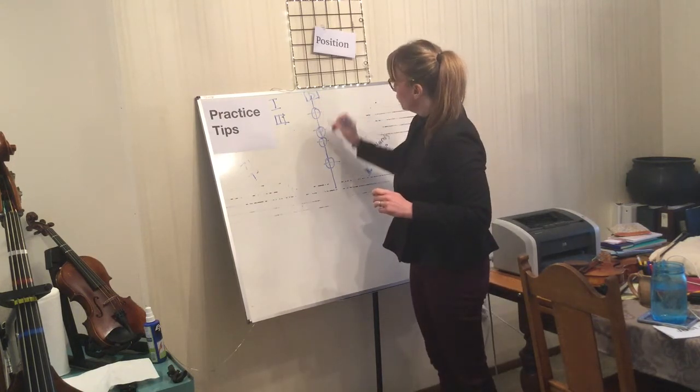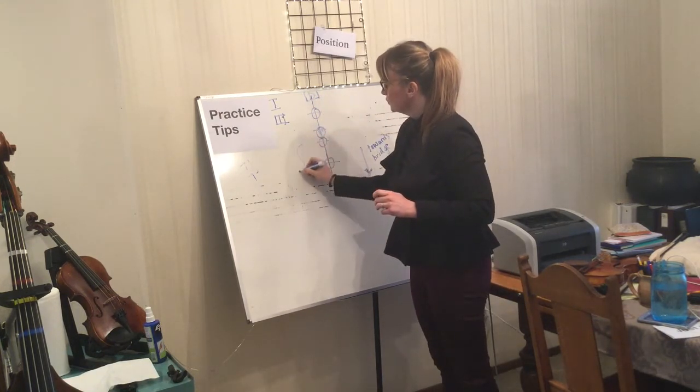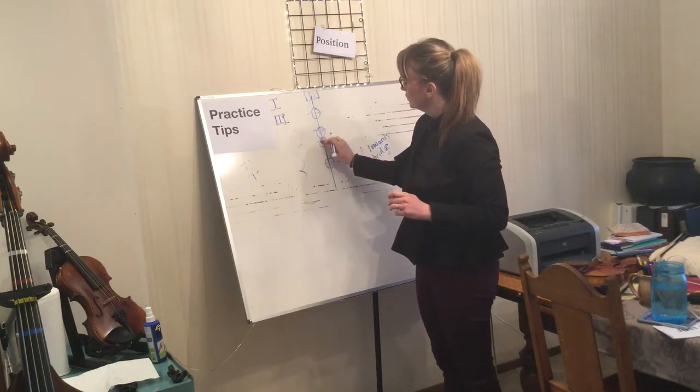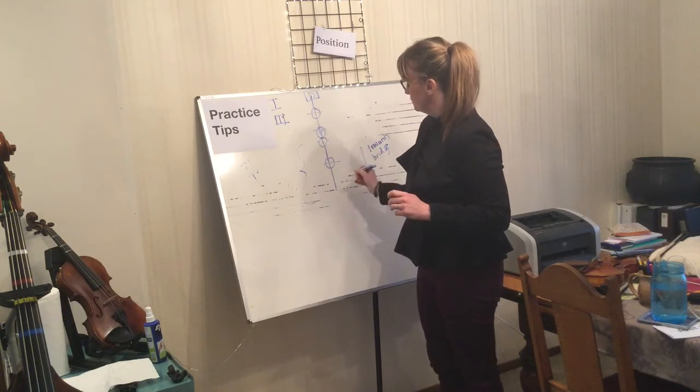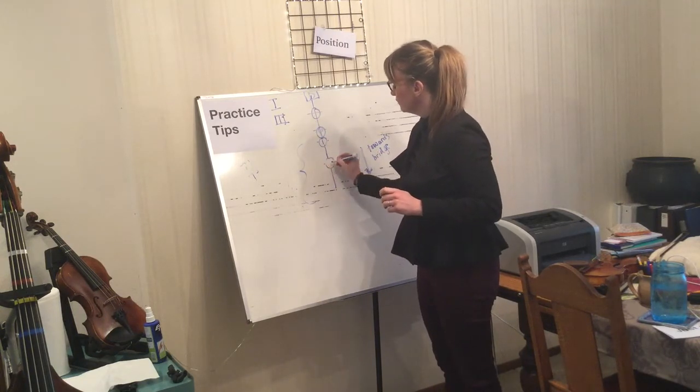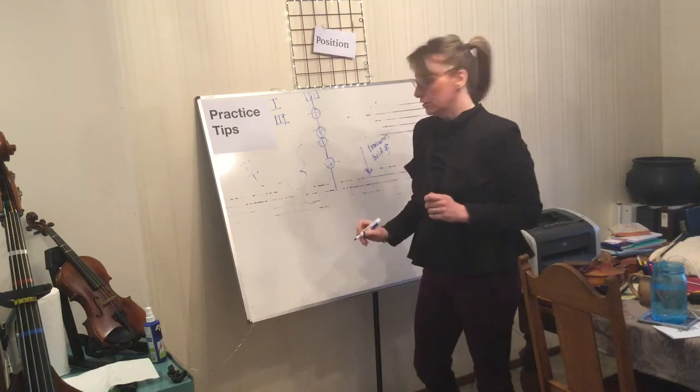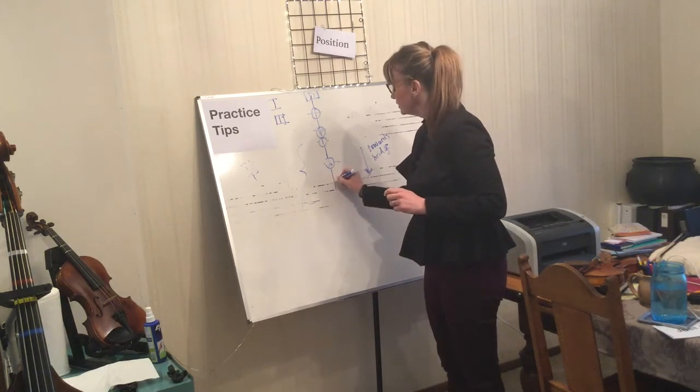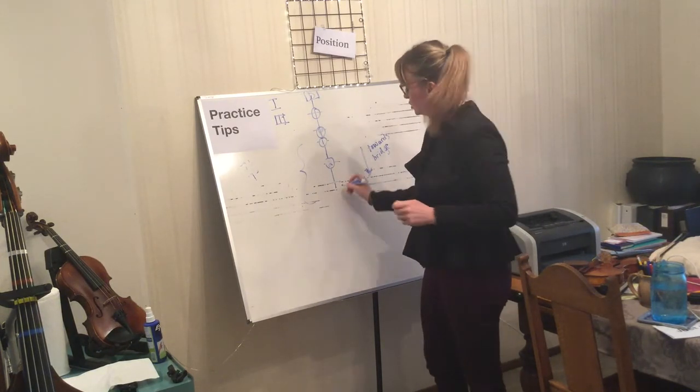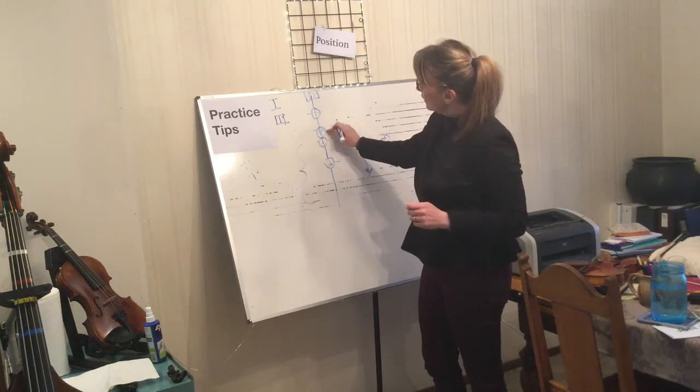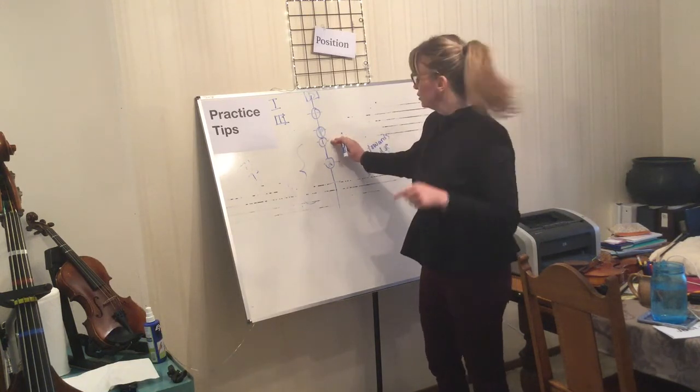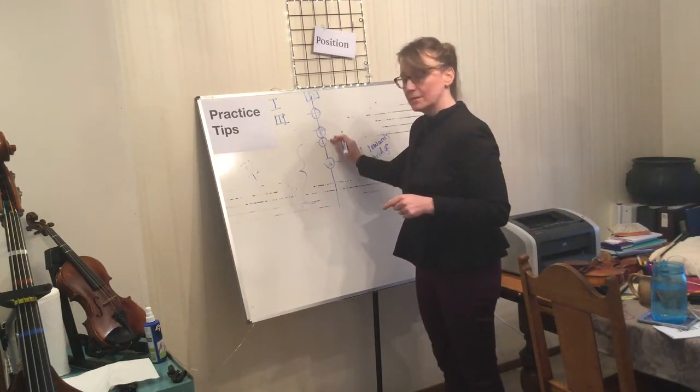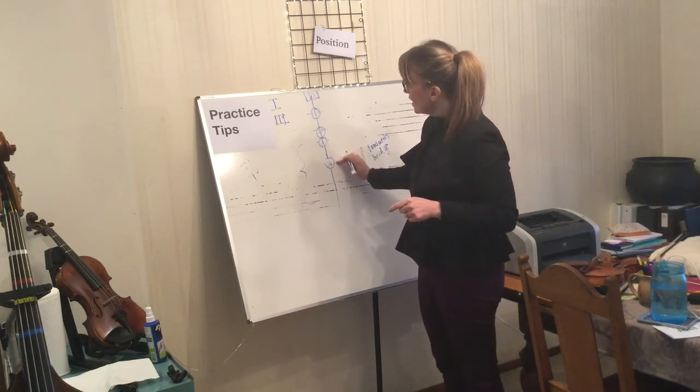Now when we shift up to third position we do it right here. We're gonna put our first finger on the third finger tape and our second finger will go on the fourth finger tape. Because we are in third position, F sharp is here. This note is G, so that's a half step away.